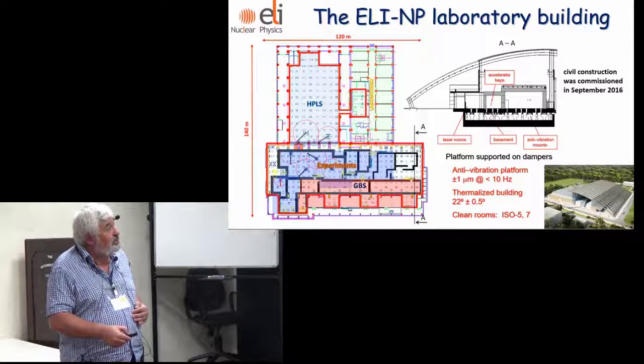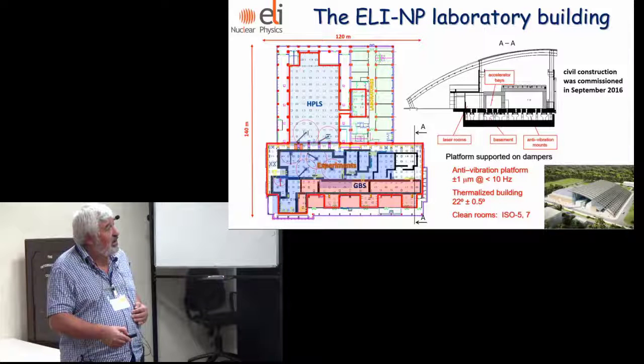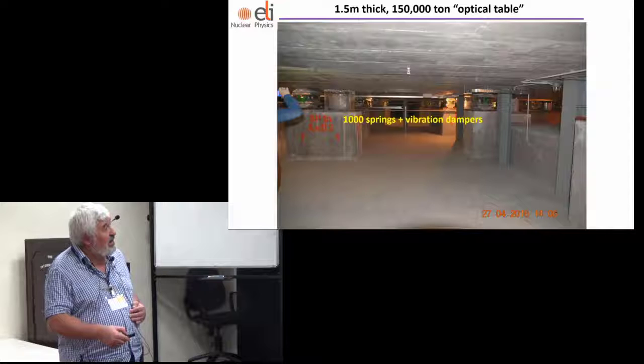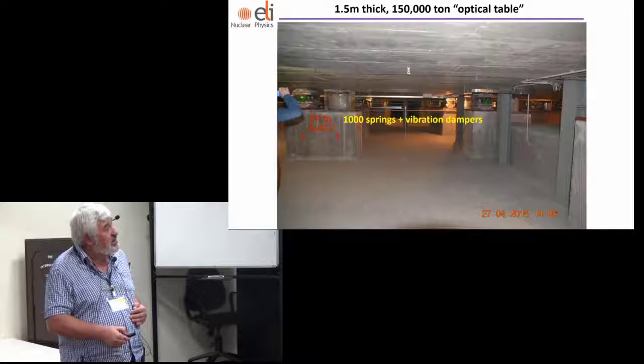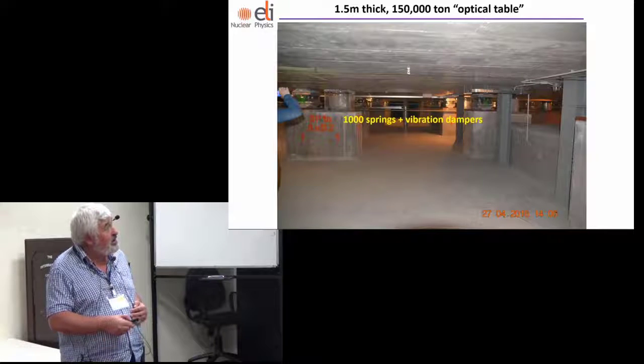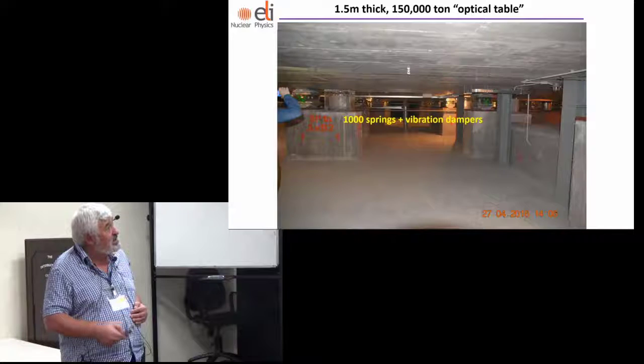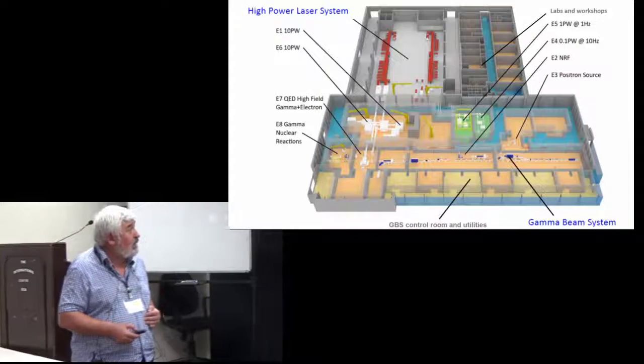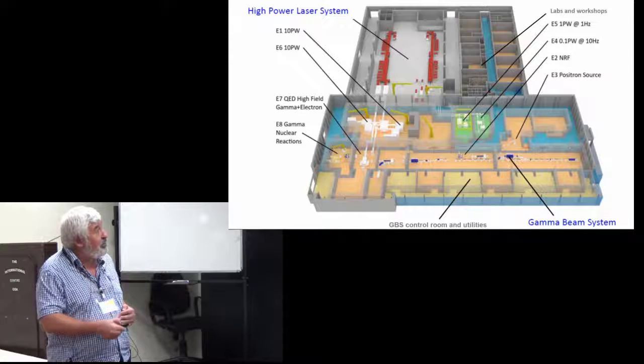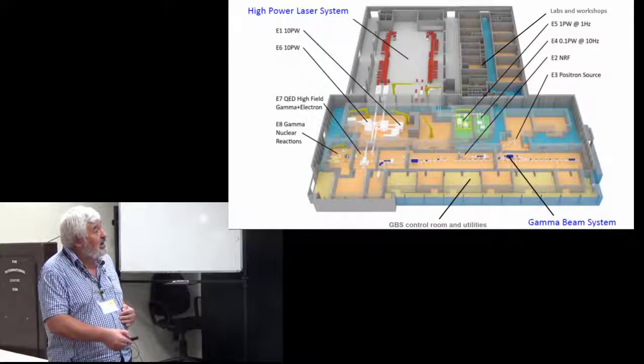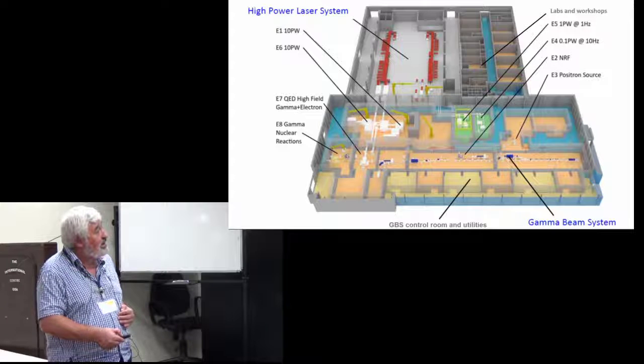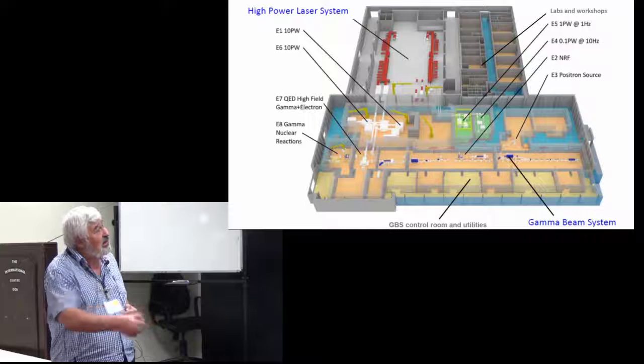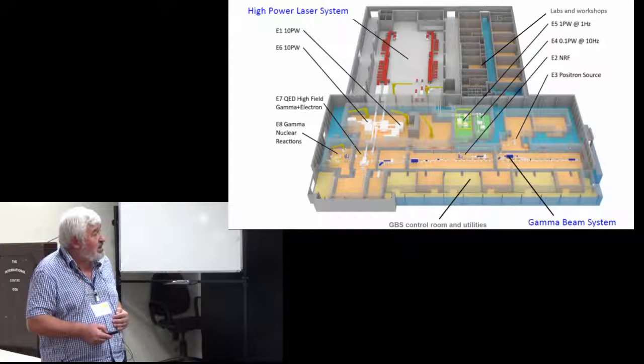The platform is put on anti-vibration mounts. In the basement there are about 1,000 springs and dampers, so you can look at this as a 150,000 ton optical table. In this building we have the two lasers, the electron accelerator for production of gamma beams, and experimental areas, laboratories and workshops.